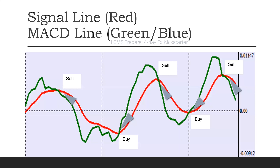Don't worry about all the wording — it looks a lot easier when you see it. The signal line is in red and the MACD line is in green or blue. If you see a triangle above the zero line, it looks like a downtrend — you're looking to sell. If you see that triangle below the zero line, you're looking to buy. If the MACD green line is above the signal red line but above the zero line, you could be looking to buy, but the upside move might be a bit limited.